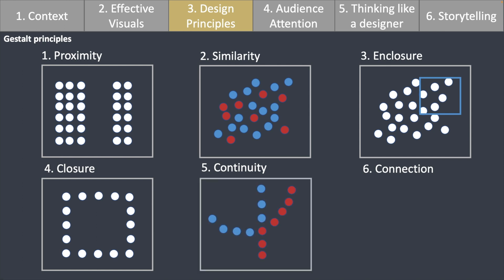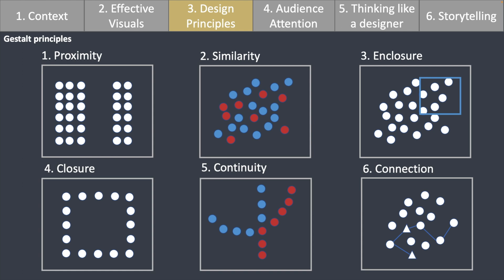In continuity, we look for what appears to be the smoothest path. In this case, most of us will first see a vertical line going down and a curve — although there are two different colors, our first focus is finding the smoothest path. This can also be an example of how certain principles might be stronger than others; continuity is stronger than similarity here. And lastly, connection: when we connect different objects, our eyes perceive that these objects are linked together. The book has many great examples demonstrating how these principles can be applied to data visualization.